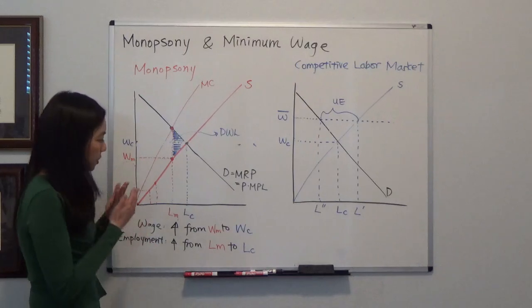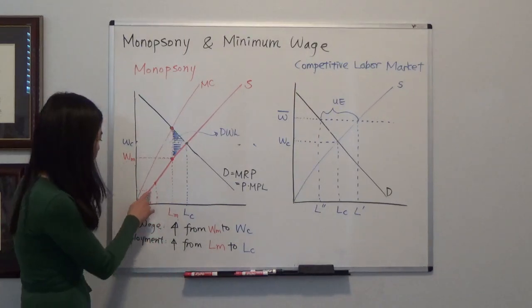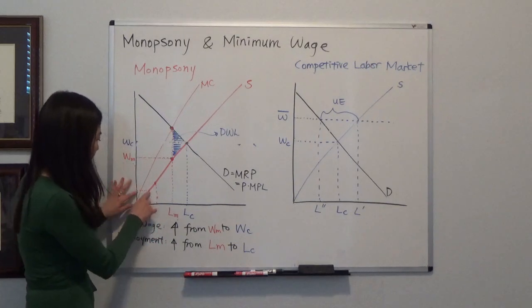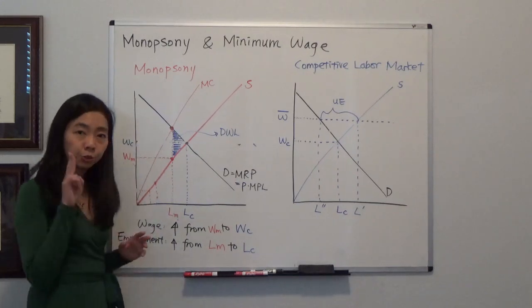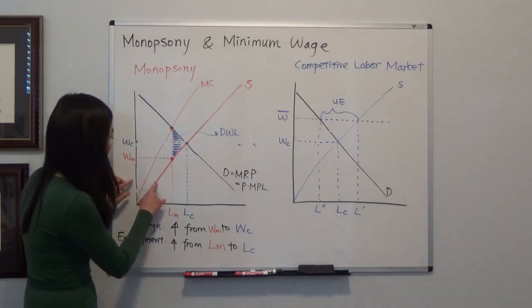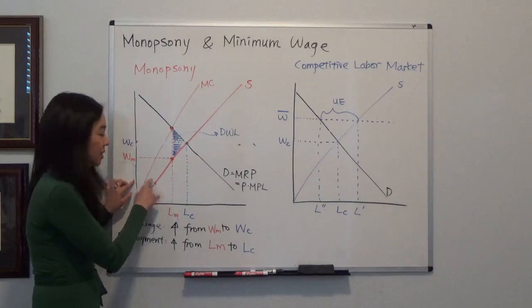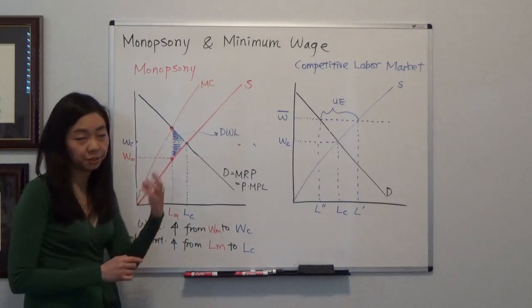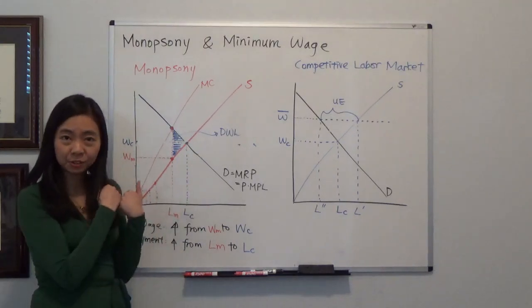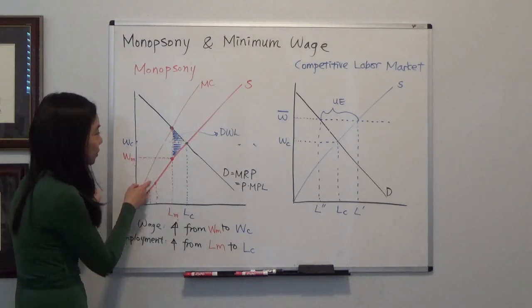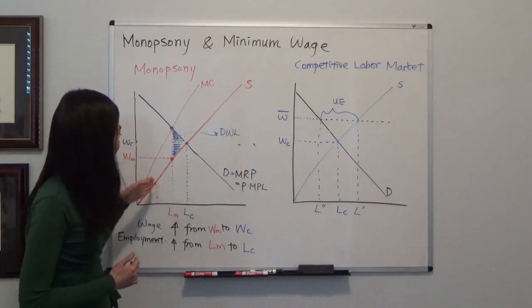So how is that? Suppose you're a monopsony, then if you hire one worker, you pay a low wage like that. But if you want to hire two workers, then you have to increase the wage, not just the wage of the additional worker, but also the wage of the previous worker. And therefore, your marginal cost is going to be higher than your supply curve.